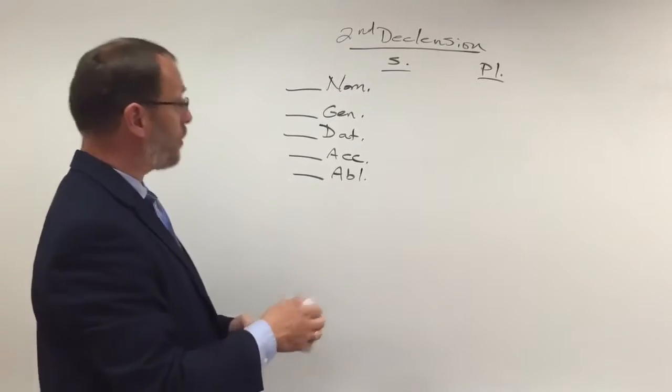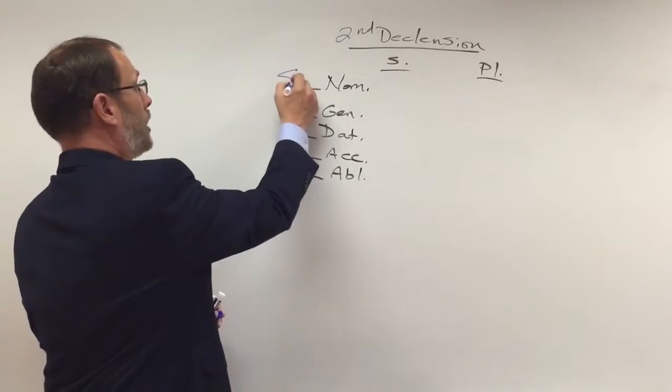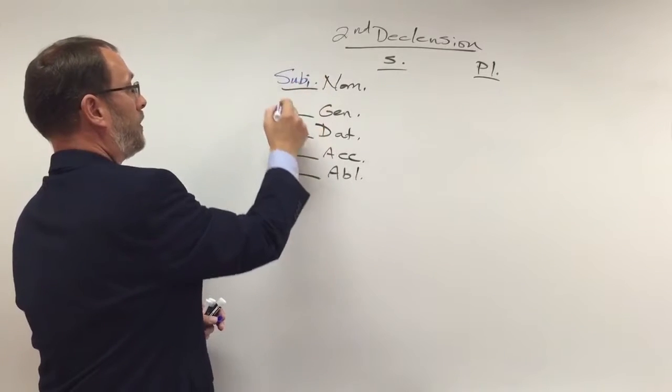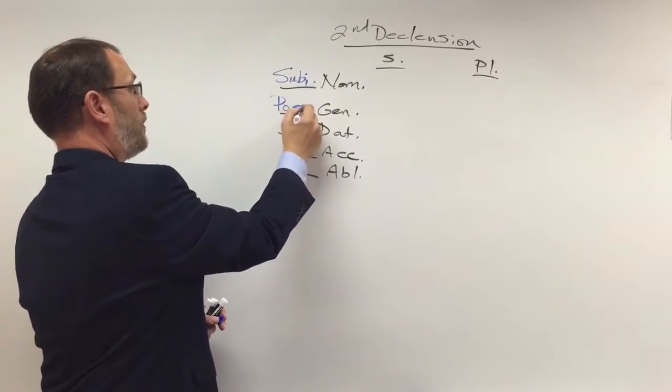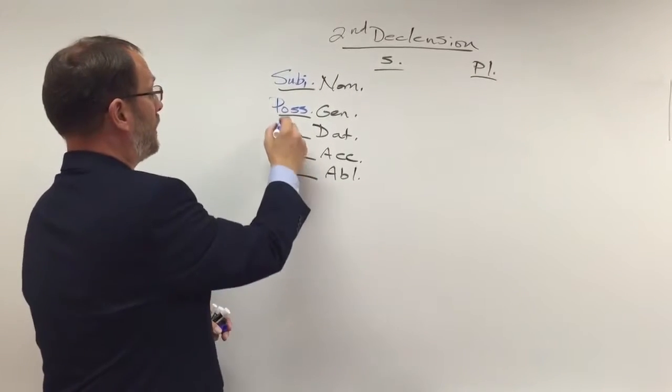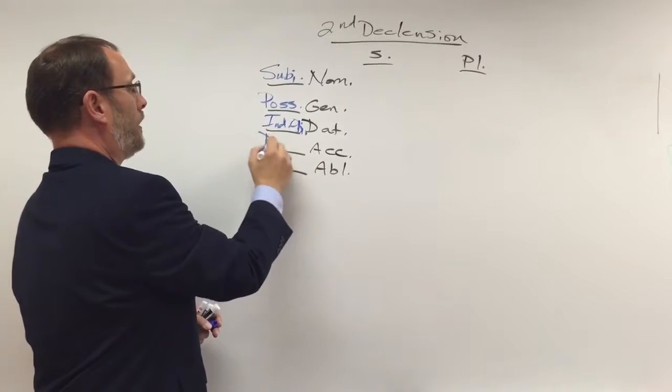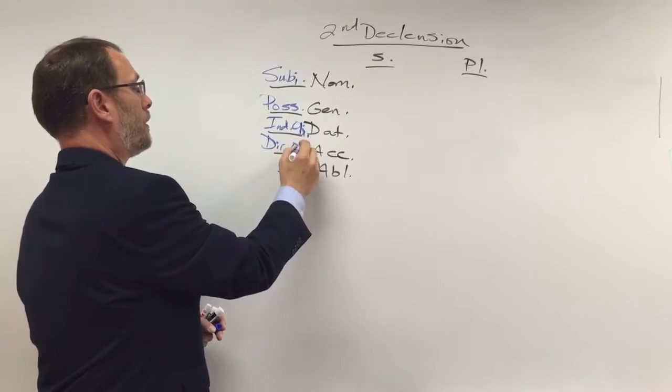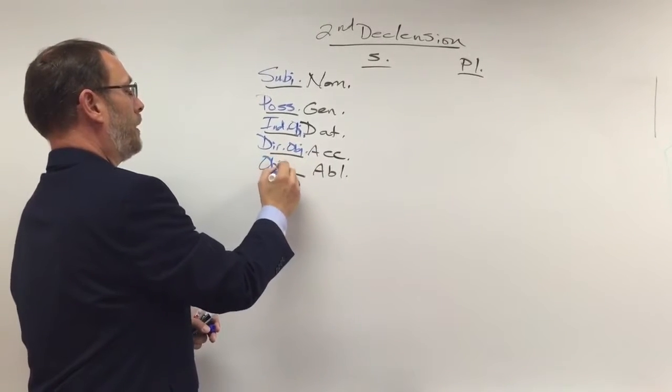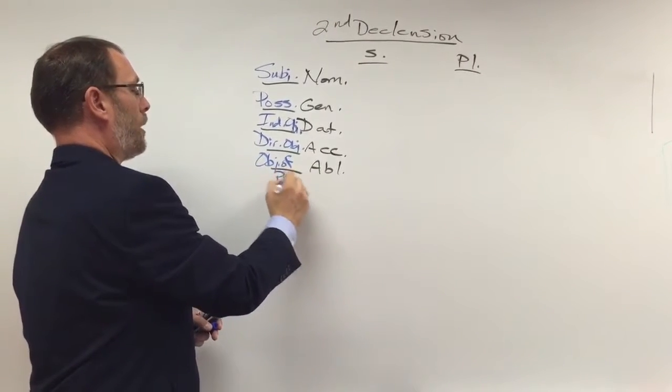Okay, assuming that you've got that, you should have found subject for nominative. Genitive shows possession. Dative is indirect object. Accusative is direct object. Ablative is object of preposition.